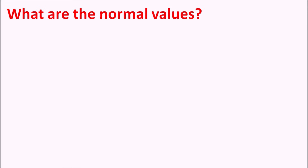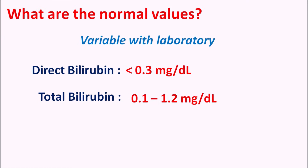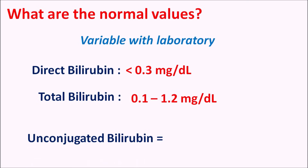What are the normal values? Normal values of bilirubin are variable with laboratory conditions. Generally, direct bilirubin levels fall below 0.3 mg/dL, and total bilirubin levels range from 0.1 to 1.2 mg/dL. From these two values, indirect bilirubin can be calculated as total minus conjugated bilirubin, which falls below 0.7 mg/dL, though these normal values may slightly vary with laboratory conditions.